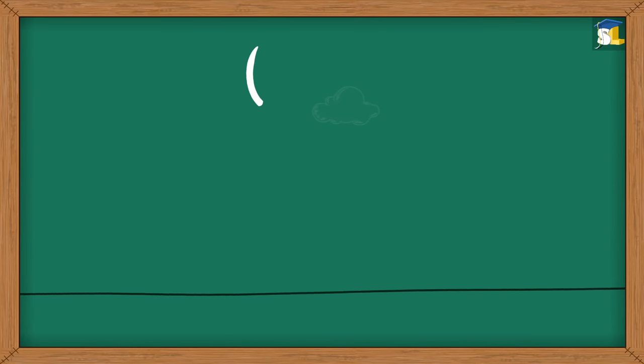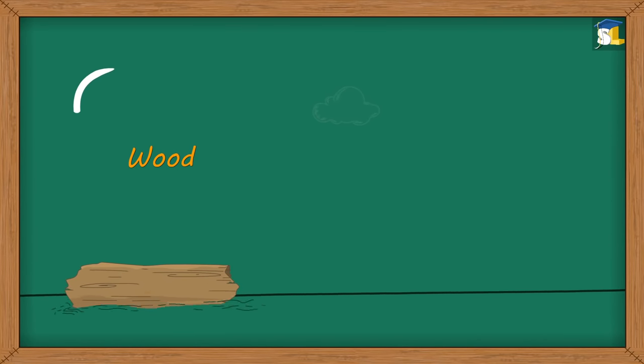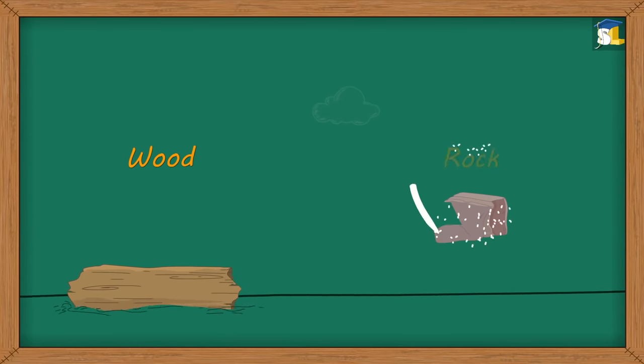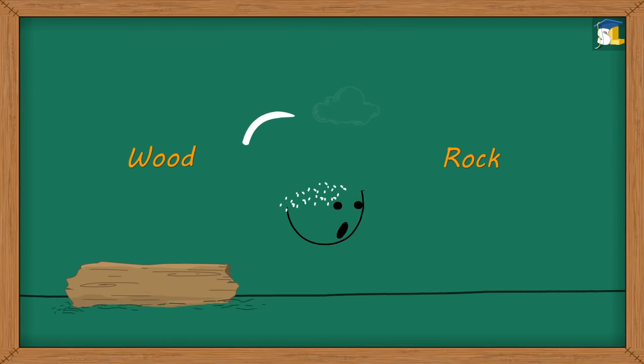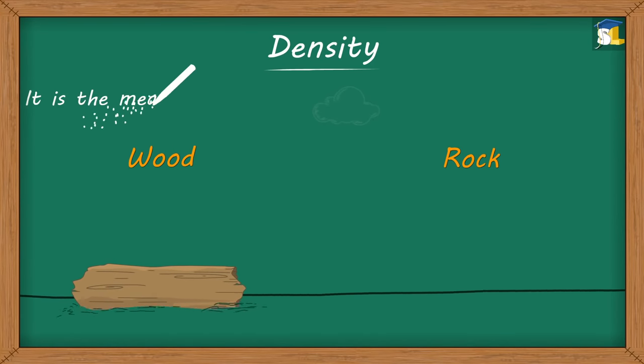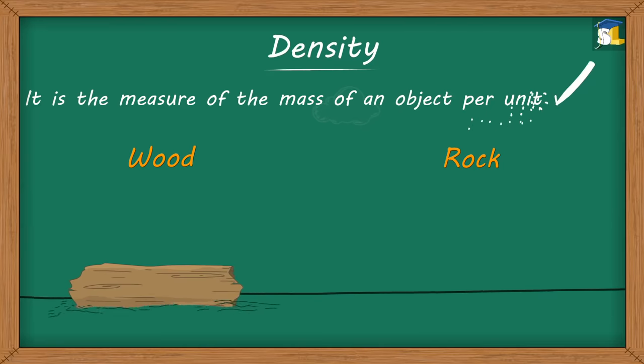Did you realize that a large log of wood floated on water but a comparatively smaller piece of rock sank? How is this even possible? This is possible because of density. It is the measure of the mass of an object per unit volume.